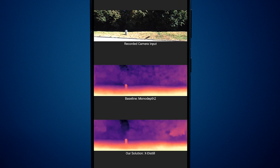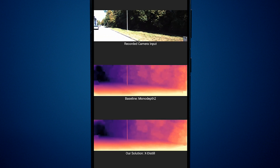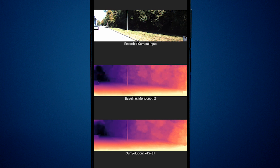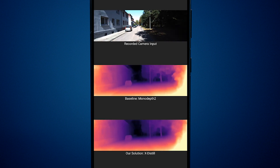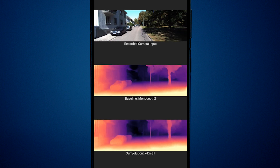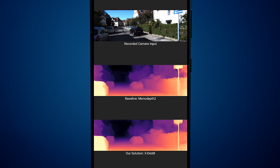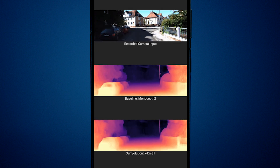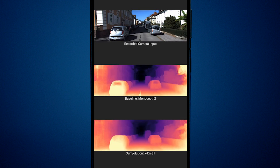In this scene, the baseline incorrectly predicts the car to be at a much farther location, as indicated by the dark colors. This may be due to the strong light reflection on the car. Despite such visual challenges, xDistil predicts accurate depth in this case. It can also be seen that xDistil predicts more accurate depth over the car windows, whereas the baseline incorrectly predicts these at farther distances.